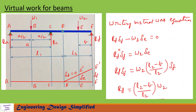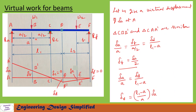Now writing the virtual work equation: Rf*delta_F - W2*delta_E = 0. The displacements at A, B, C and D are zero, so the equation applies only to this portion. Substituting delta_E in terms of delta_F and simplifying, we get the reaction at F: Rf = ((L2 - b) / L2) * W2.